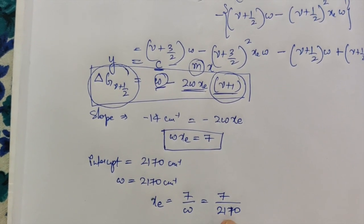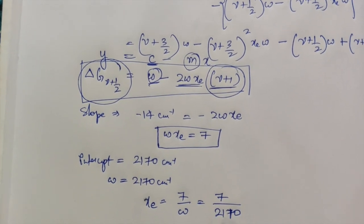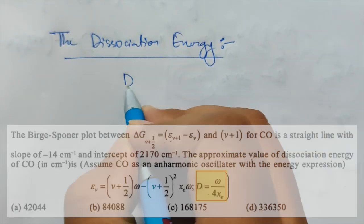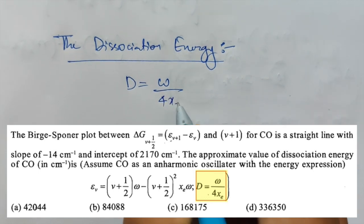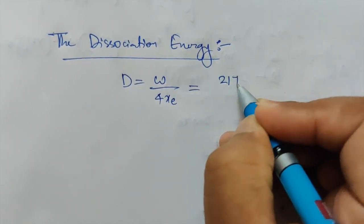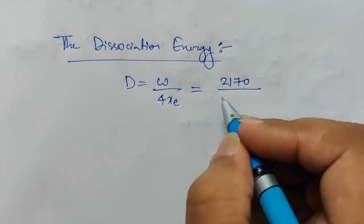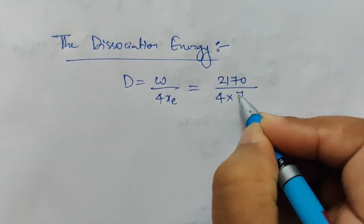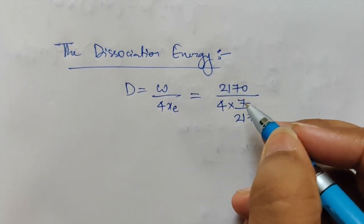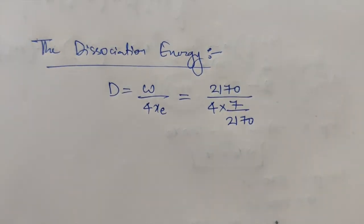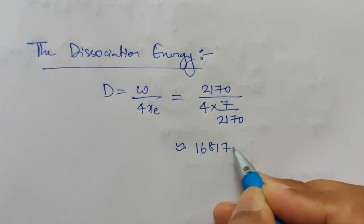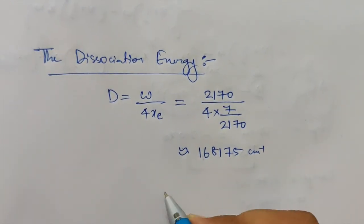Now we can calculate the dissociation energy. From the question, D = ω / (4Xe). Substituting: ω = 2170 and Xe = 7/2170, so D = 2170 / (4 × 7/2170) = 2170 × 2170 / 28. On solving this approximately, you get D ≈ 168,175 centimeter inverse, which is option C.